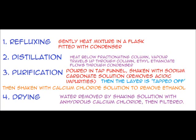Stage 2: Distillation. This separates the ester from the by-products. The solution is heated below a fractionating column. The vapor travels up the column. Ethyl ethanoate flows through the condenser and is collected.